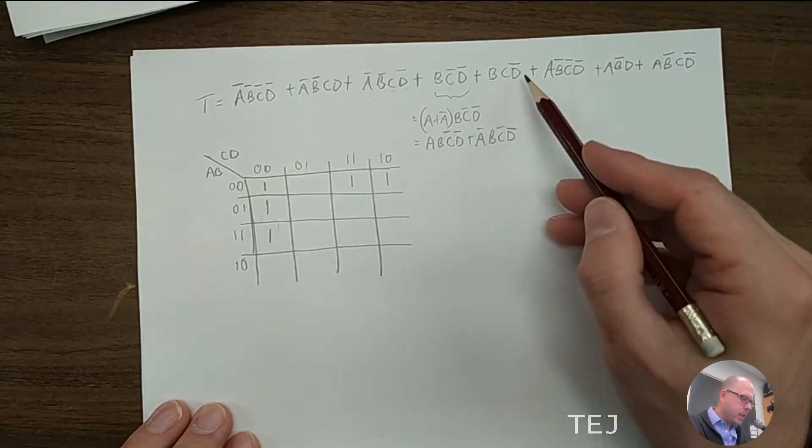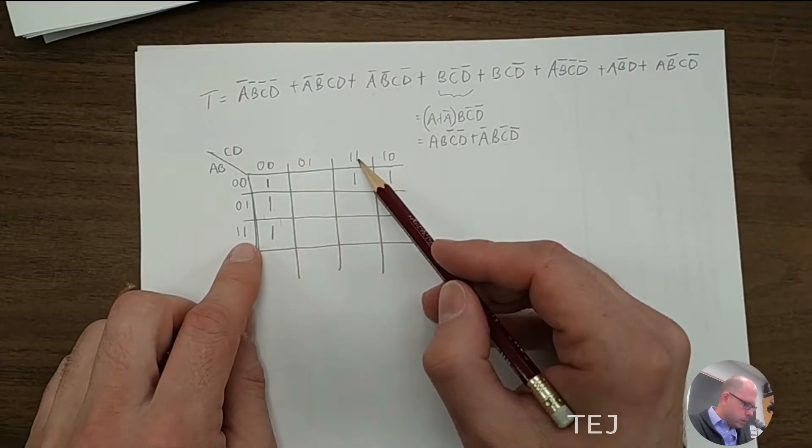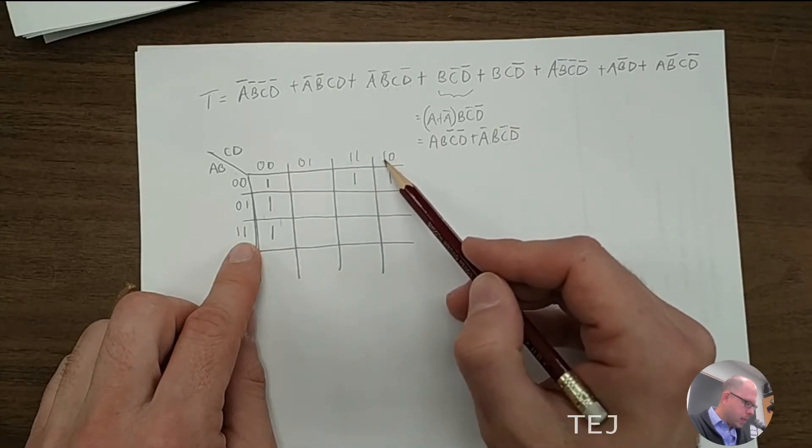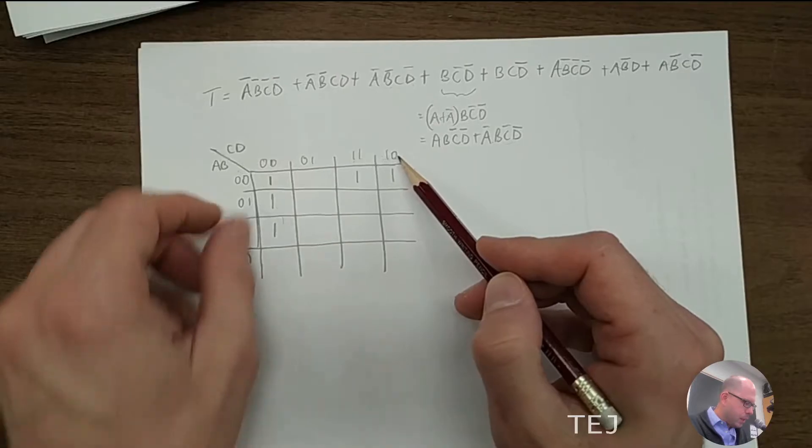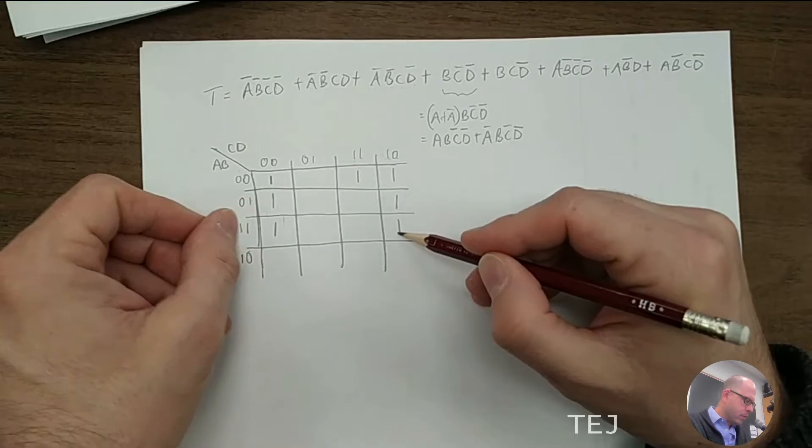Now we have b, c, d naught. So we want b, c, c, d naught. So this is the c, d naught, and this is b. These two are b. So we're going to put ones right there and there. I'm not expanding it. I'm just jumping right to the final thing.